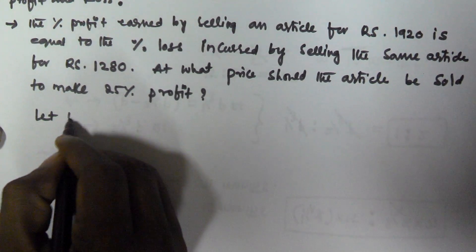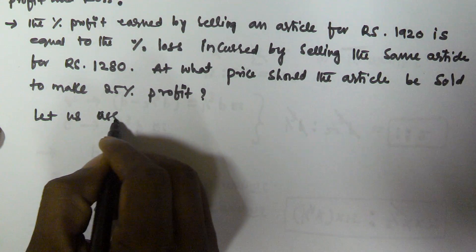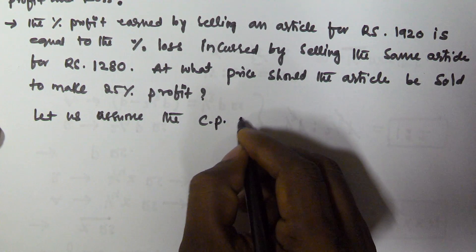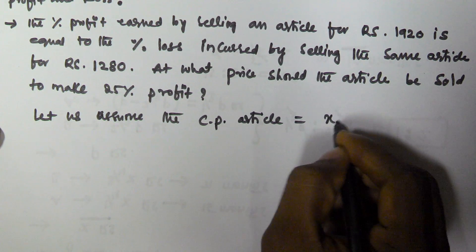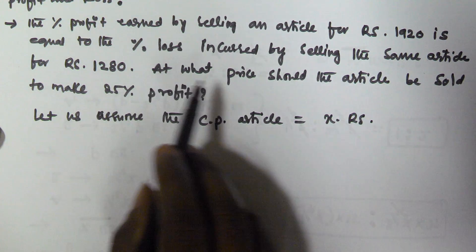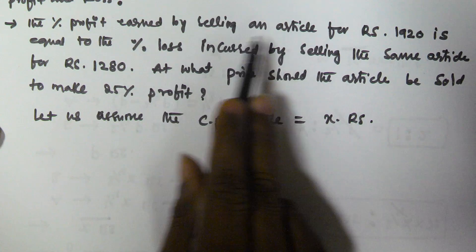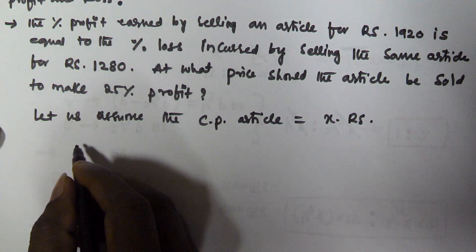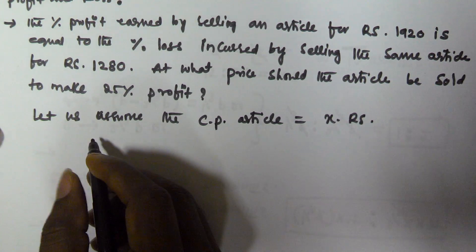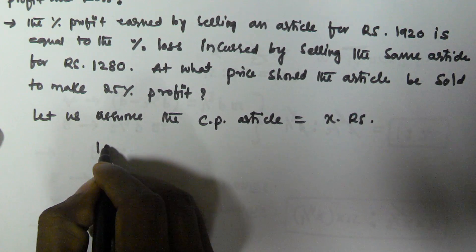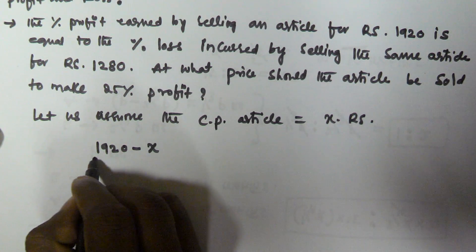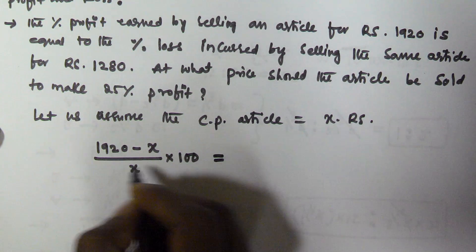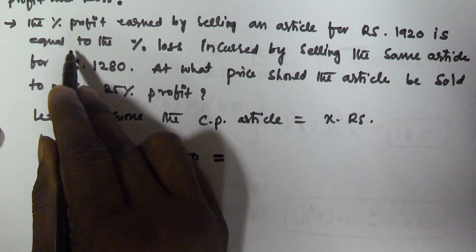Let us assume the cost price of the article is equal to x rupees. Then the profit percentage by selling the article for 1920 is given by: selling price minus cost price, by cost price, into 100. So profit % = (1920 - x) / x × 100.